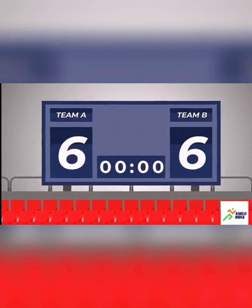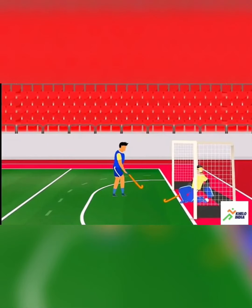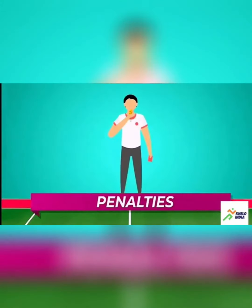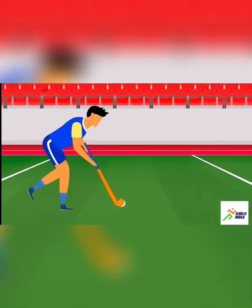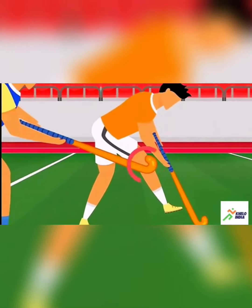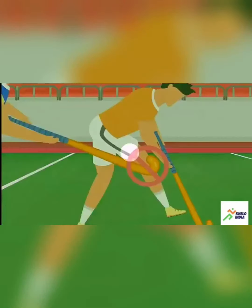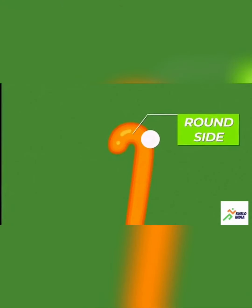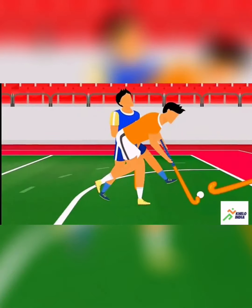Do you all know when the umpire gives a penalty during a match? A penalty is given when the player hits the opponent with a stick, or when the ball is played on the round side or the back side of the hockey stick, or when the player makes a foul inside the shooting circle. Then either a penalty corner or a penalty stroke is given.